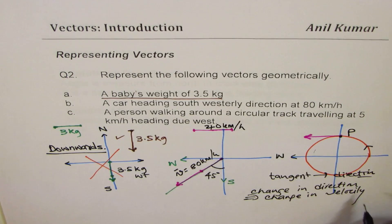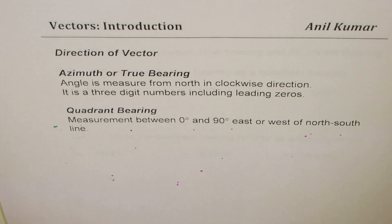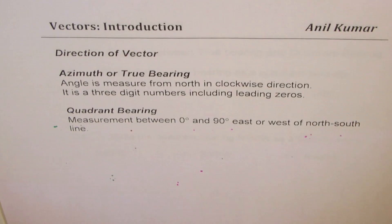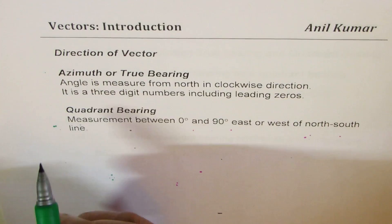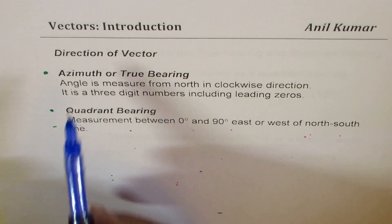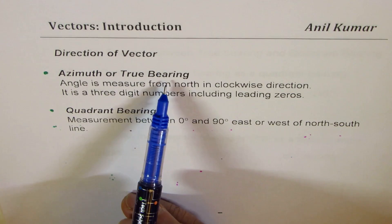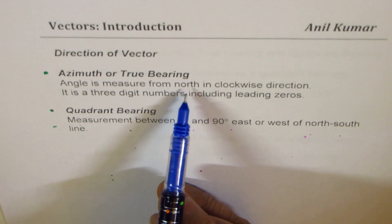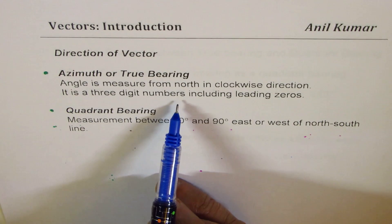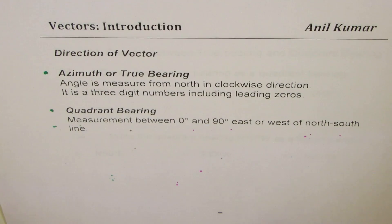Now let's talk about how to represent angles in vectors — the direction of vectors. There are two very popular ways of representing the direction of any vector. One is known as azimuth or true bearing, and the other one is quadrant bearing.